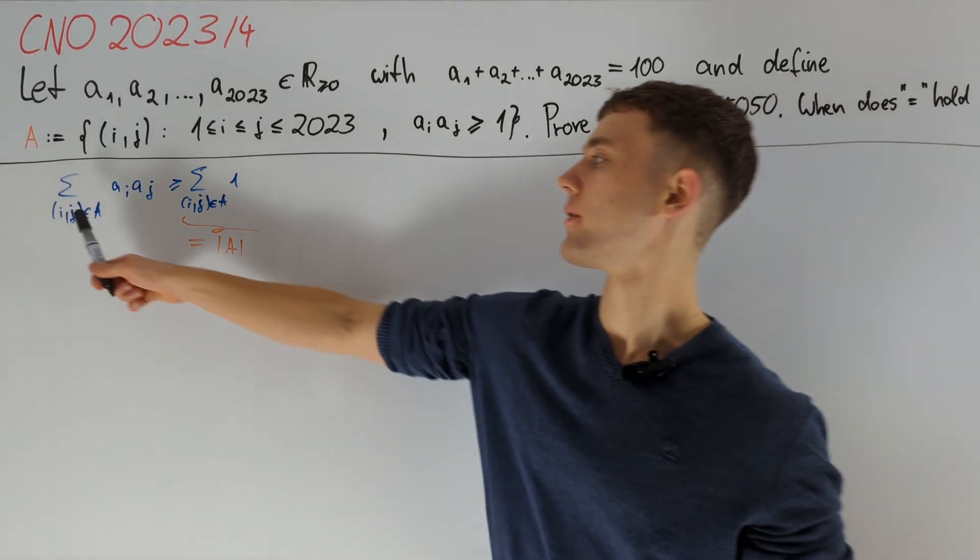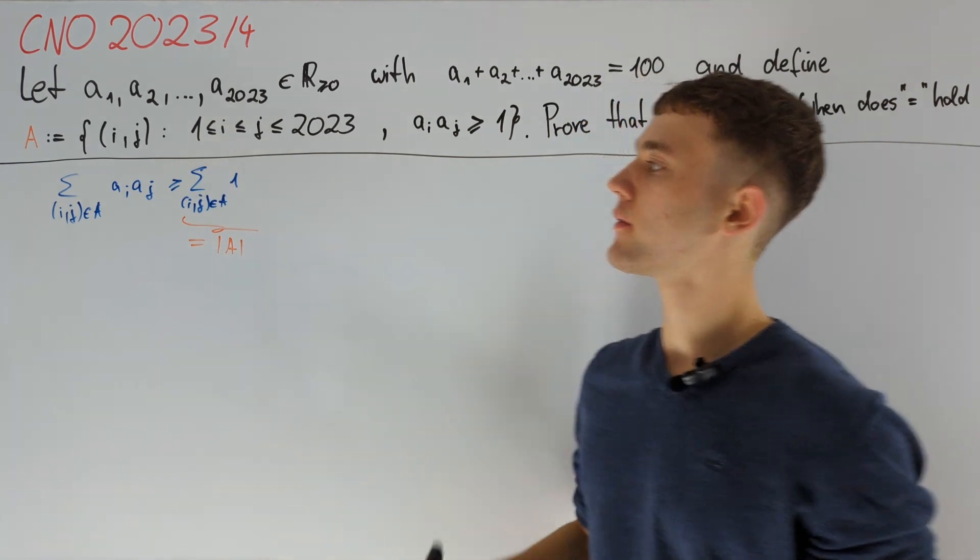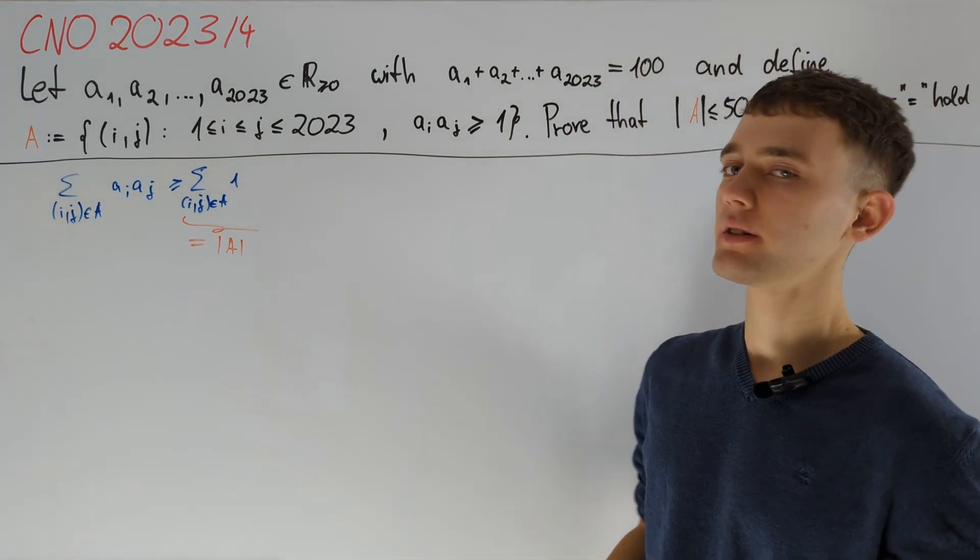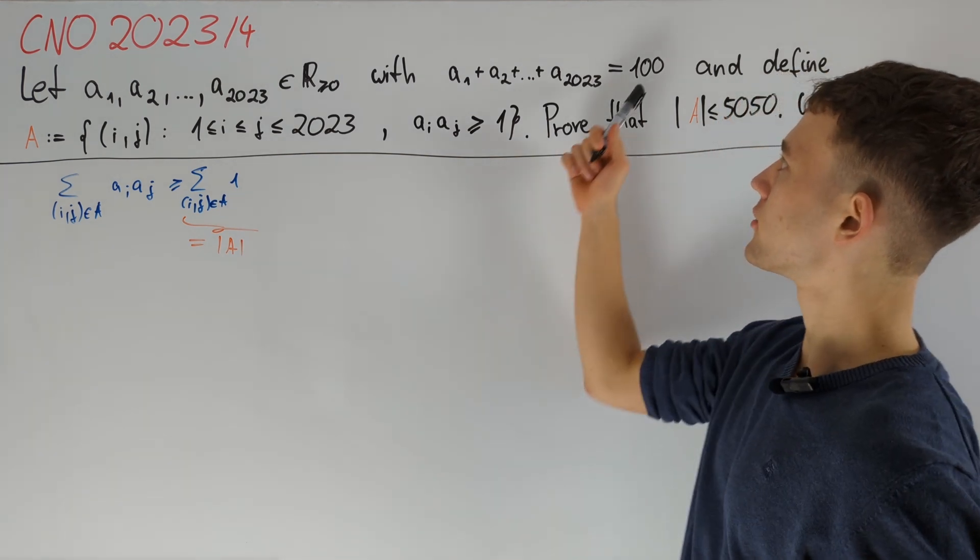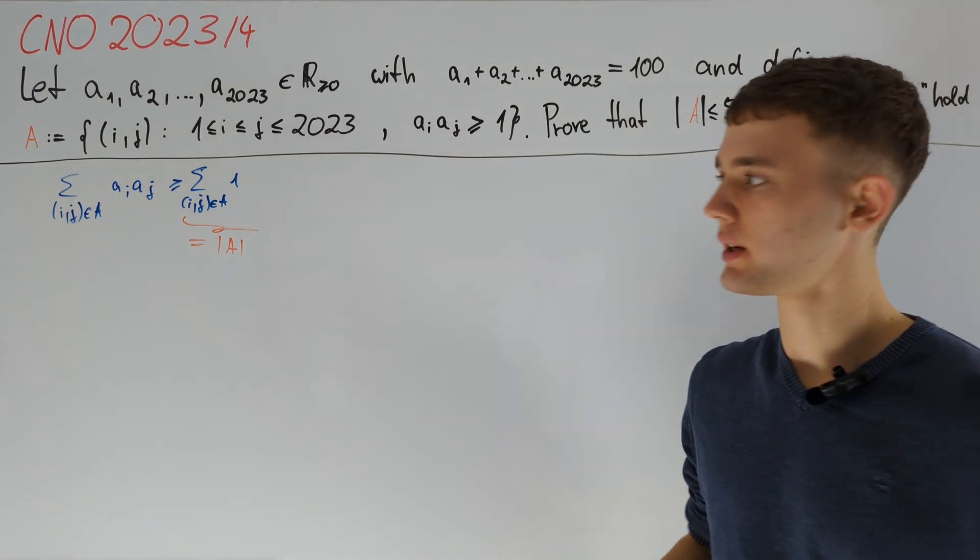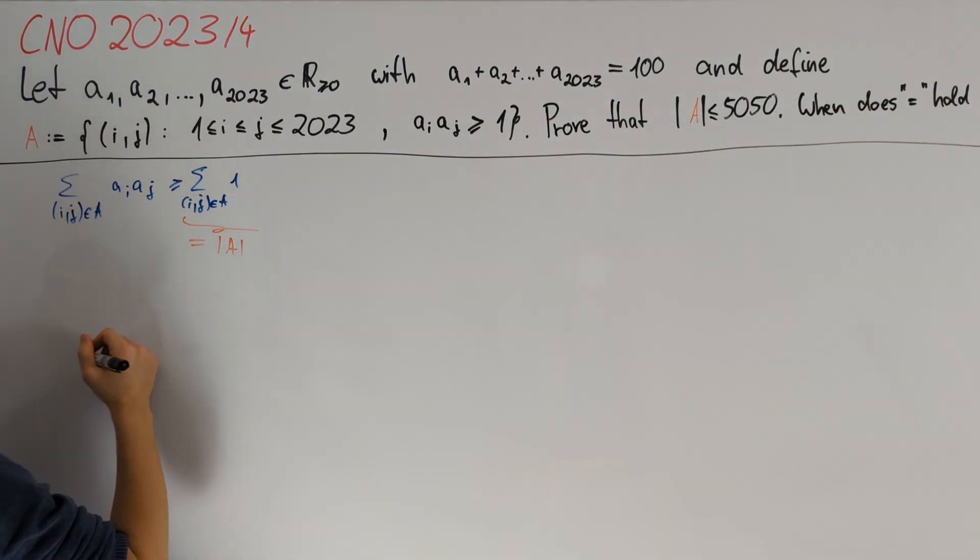So we want to bound this sum of a_i*a_j from above, but we can clearly relate it to the square of the sum of the a_i, which we already know to be 100 squared. So we will do this in the following way.